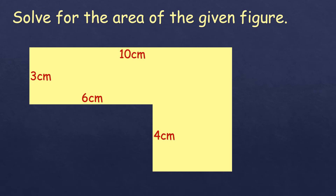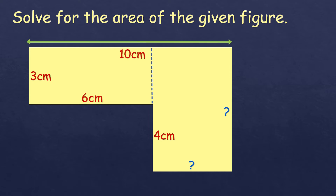Let me show you another way to solve it. We're going to slice it differently, forming two rectangles — one with a 3 by 6 dimension, and one on the right side whose length and width are still missing. So we need to solve for those first before we can find the area. Let us solve for the width: we know this side is 10 cm, and the opposite side must also be 10 cm. This part is given as 6 cm, so what's lacking to make it 10 cm is 4 cm — and that is the width.